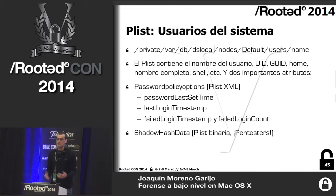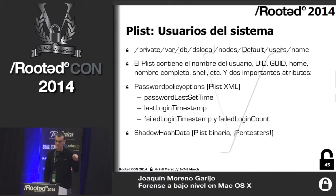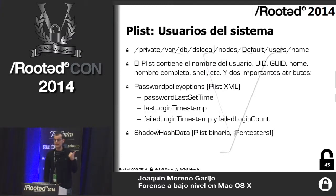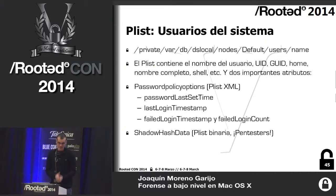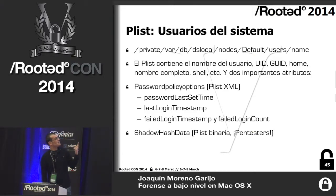Starting with user account Plists: system users use a basic Plist storage format with two important fields. First, the policy / password policy — XML within another XML, binary in nature — tells us the last time the password was changed, the last time someone logged in, and how many failed login attempts there were. Very important: Apple resets this counter. So if I do one million attacks, it records how many I did — but if someone accesses the system, it resets to zero.